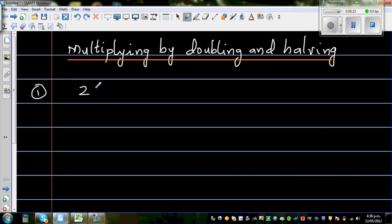Suppose the question is 28 times 5. You can do this in different ways but my focus is to teach you how to multiply by doubling and halving. So here we are multiplying two numbers. Let me start with a simple example.